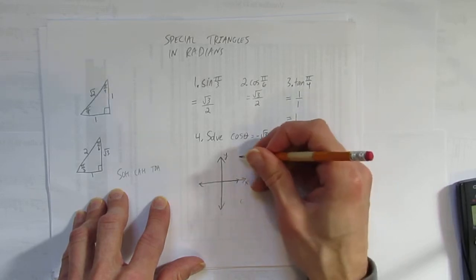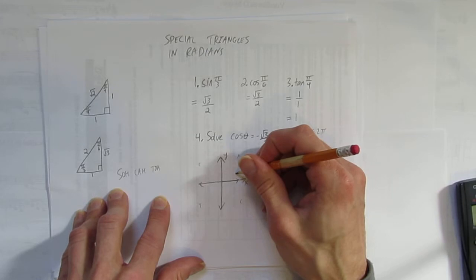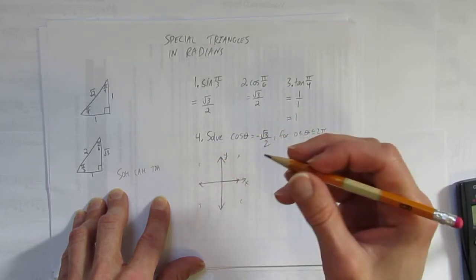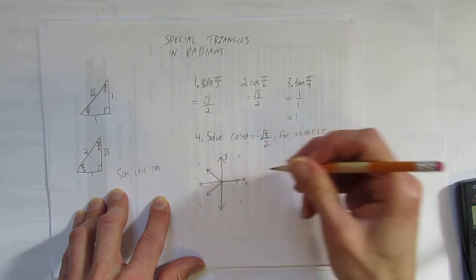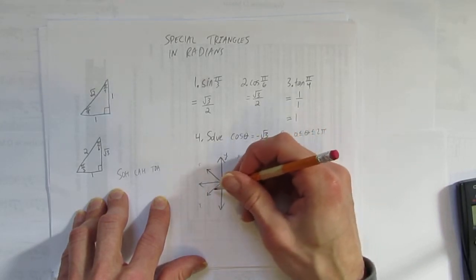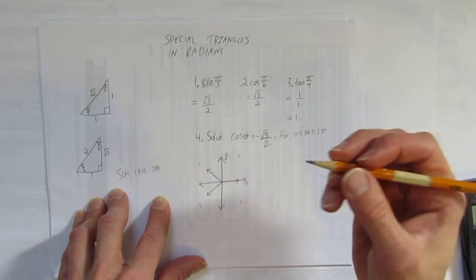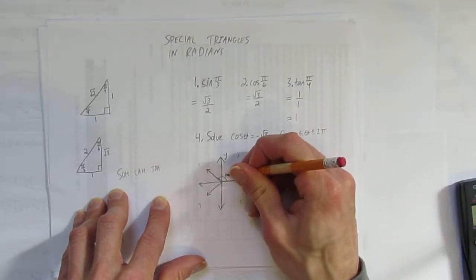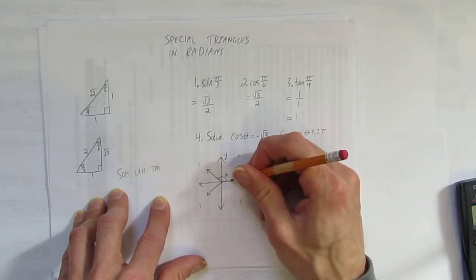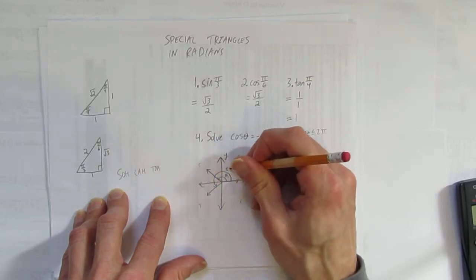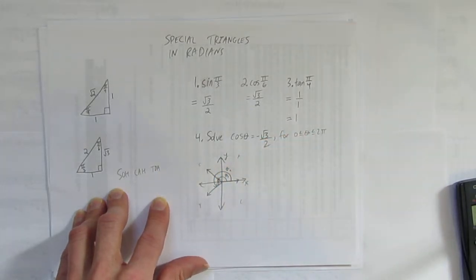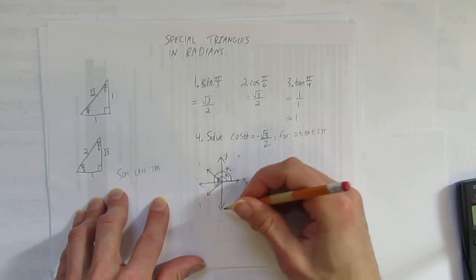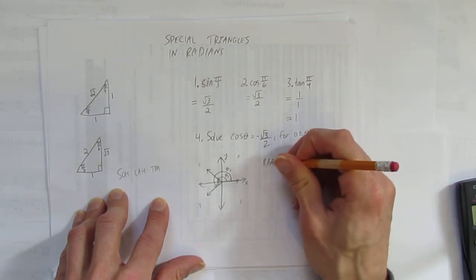Cosine is negative, so remember the CAST rule: everything is positive in quadrant 1, and cosine is positive in quadrant 4. That means cosine is negative in quadrant 2 and quadrant 3. Draw a terminal arm in each of those quadrants — don't worry about the arms being the same length, just make sure they're in the right quadrants. Label each rotation theta 1 and theta 2, and label the related acute angle inside each triangle as beta.